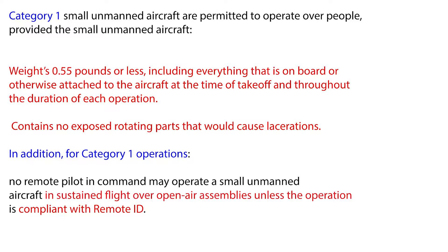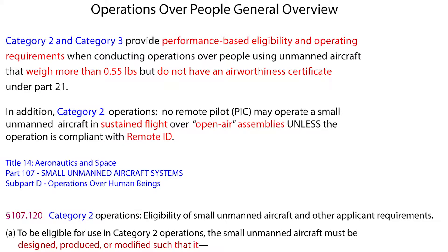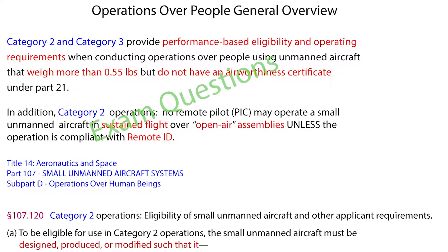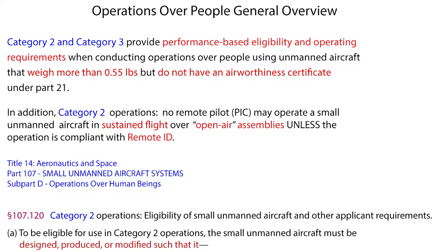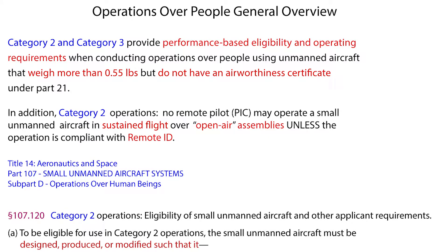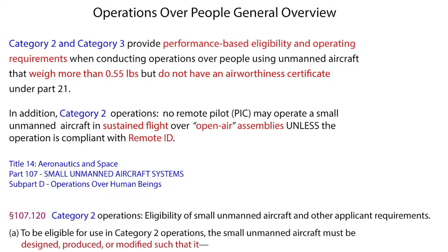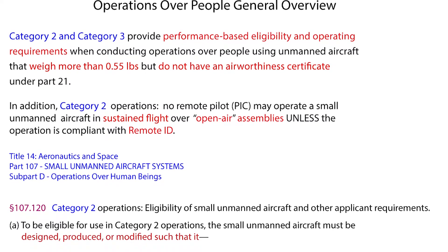Test questions are in green with those little Qs on the end. Category 2 and Category 3 provide performance-based eligibility and operating requirements when conducting operations over people using unmanned aircraft that weigh more than 0.55 pounds but do not have an airworthiness certificate under Part 21 — remember that. In addition, for Category 2 operations, no remote PIC may operate a small unmanned aircraft in sustained flight over open air assemblies unless the operation is compliant with Remote ID.